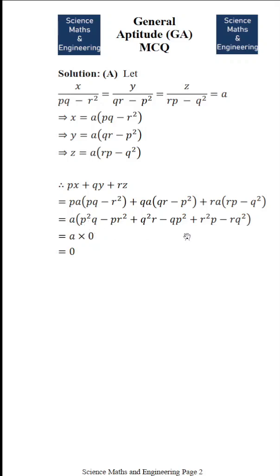So, if you see p square q and minus p square q gets cancelled, minus pr square and plus pr square gets cancelled, then q square r and minus q square r gets cancelled. So, the answer is 0.